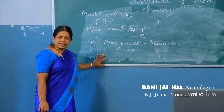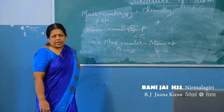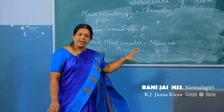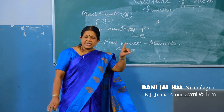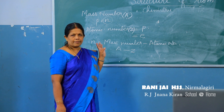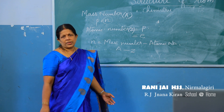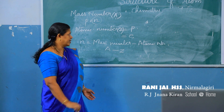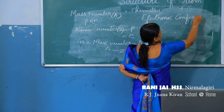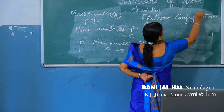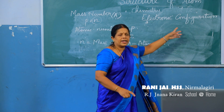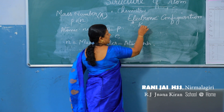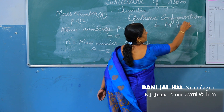To draw the Bohr model of the atom, we need to know how the electrons are arranged around the nucleus. Electrons are arranged in fixed paths called shells or orbits around the nucleus. The arrangement of electrons around the nucleus is called electronic configuration. The shells are K, L, M, N, and O.